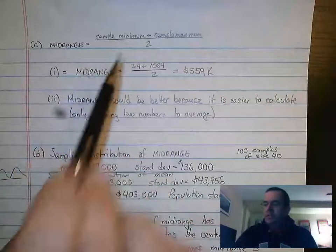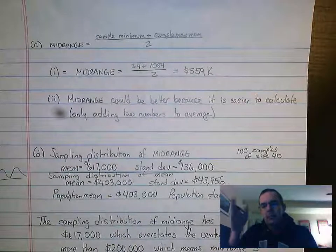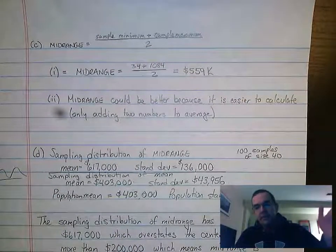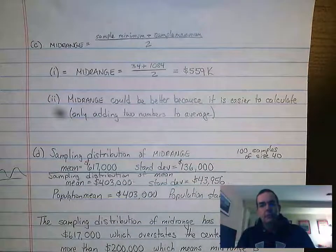What they said is the mid-range is basically the average of the minimum of the sample and the maximum of the sample. So the biggest value and the smallest value, add them together, divide by two, that's your mid-range.